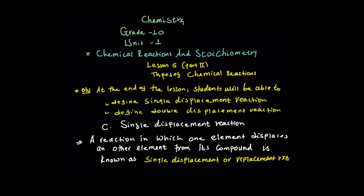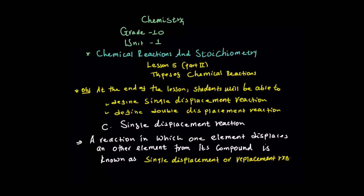Combination reactions: when two substances combine to produce one single compound, we call it combination reactions. We combine to form one single compound — that we call it combination reactions.